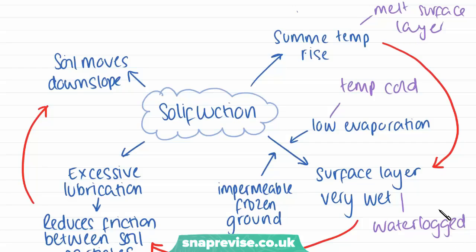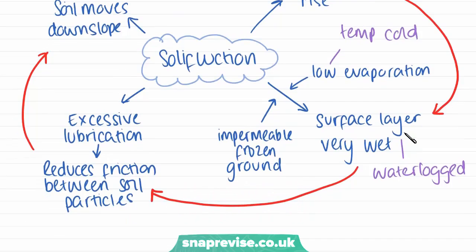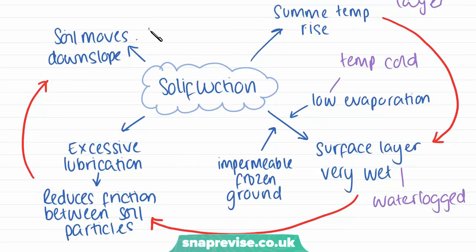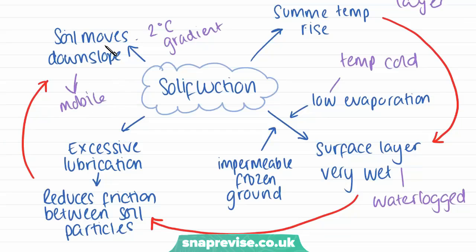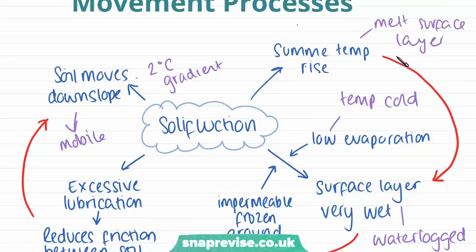The surface layer becomes completely saturated with water, also known as waterlogged. Due to this saturation, there is excessive lubrication because the water reduces friction between soil particles, meaning they can move around each other easily. When we have slopes — and these only need to be as gentle as two degrees in gradient — the saturated layer becomes mobile and starts to flow downslope. When related to the freezing and thawing of the active layer in cold environments, this process can also be referred to as gelifluction.